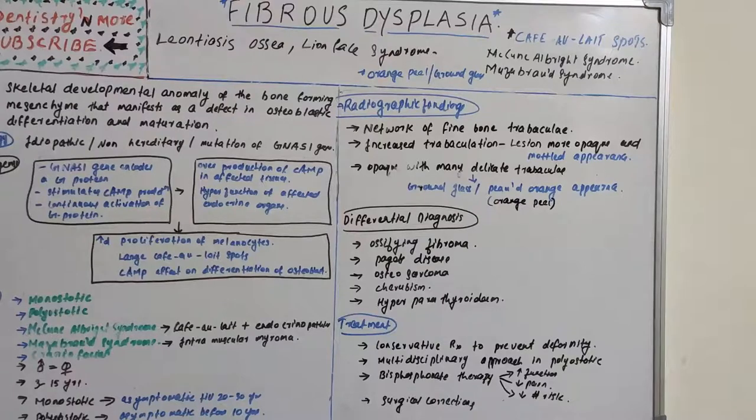That's all about fibrous dysplasia — a condition where normal bone is replaced by fibrous tissue, resulting in fracture or change in form and shape. A new topic in Dentistry and More oral pathology will follow. Thank you.